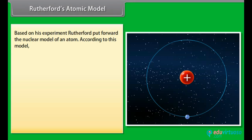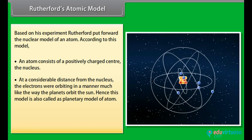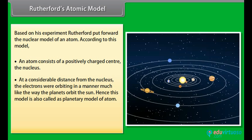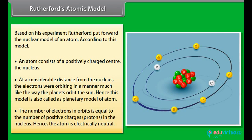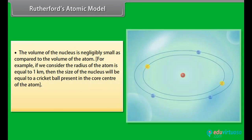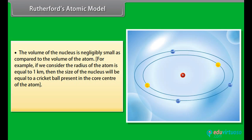Rutherford's Atomic Model. Based on his experiment, Rutherford put forward the nuclear model of an atom. According to this model, an atom consists of a positively charged center, the nucleus. At a considerable distance from the nucleus, the electrons were orbiting in a manner much like the way the planets orbit the sun. Hence, this model is also called as planetary model of atom. The number of electrons in orbits is equal to the number of positive charges, protons, in the nucleus. Hence, the atom is electrically neutral. The volume of the nucleus is negligibly small as compared to the volume of the atom. For example, if we consider the radius of the atom is equal to 1 km, then the size of the nucleus will be equal to a cricket ball present in the core center of the atom. Hence, most of the space in the atom is empty.